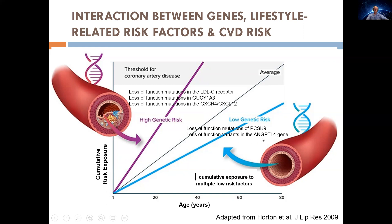Another gene, the angiopoietin-4 gene, is also protective because it lowers triglycerides. Apart from these high and low risk mutations, most coronary disease affects average people whose biological processes are distributed along a Gaussian curve, with multiple genes responsible for coronary disease risk.